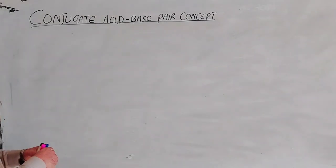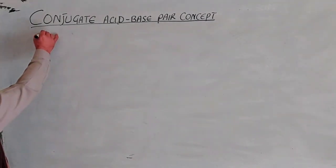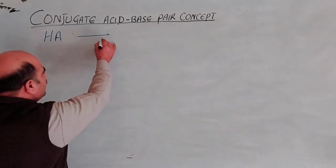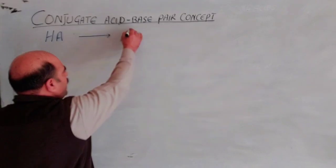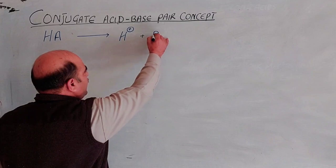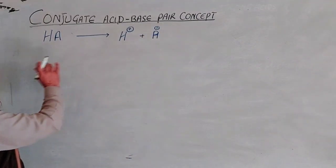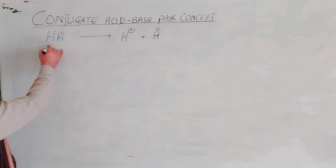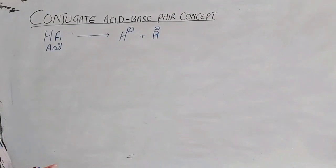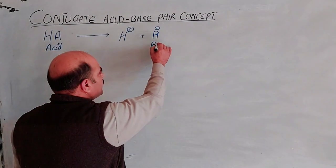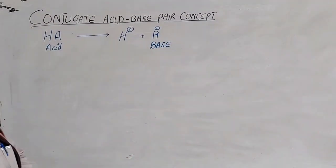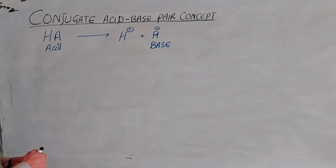In the general reaction, HA dissociates to provide a hydrogen ion — a proton — giving H⁺ and A⁻. According to Lowry and Bronsted, HA is an acid because it is a proton provider, and A⁻ is a base because it is a proton acceptor.